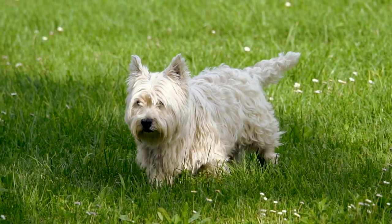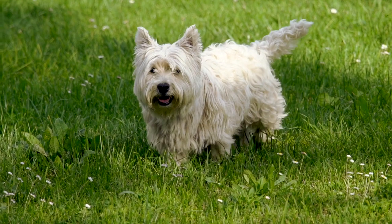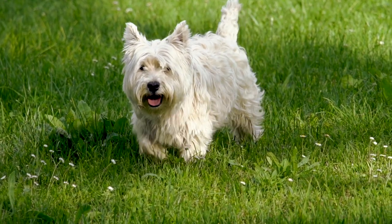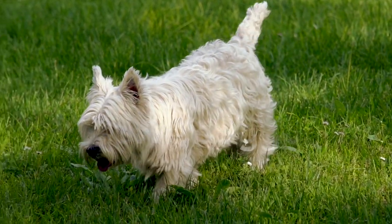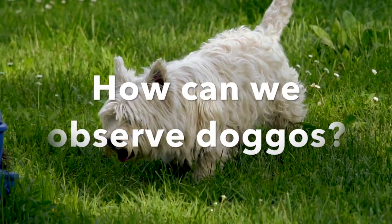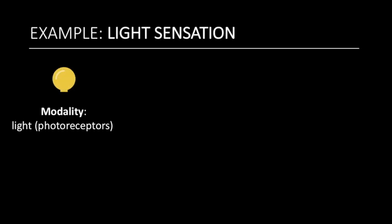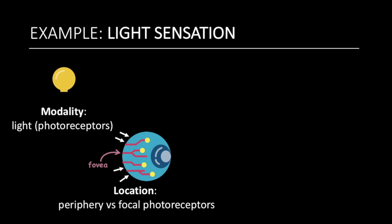Now that we know the four properties of a stimulus and their mechanisms for coding, we will use them in an example. Good doggos are one of the wonders of this world, and we are blessed to observe them. But how do our receptors know we are in the presence of these majestic beasts? When viewing a doggo, light is the primary modality which is used, and this corresponds to photoreceptors found in the retina of your eye. The location of the doggo is determined by where the light from off the doggo meets your photoreceptors. Doggos in your periphery will stimulate more receptors in the periphery of your retina, whereas those you are staring at will be more foveated.